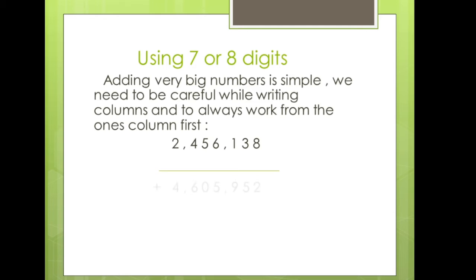Whenever you have to add seven or eight digit numbers, you always have to write them into proper columns. As we have already discussed, we always start from the ones — ones, tens, hundreds, thousands, ten thousands, hundred thousands, and millions. Similarly, the next number will come as per the assigned column: ones, tens, hundreds, thousands, ten thousands, hundred thousands, and millions.